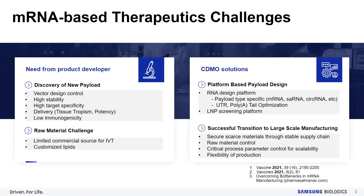I would like to start off with some of the challenges from the product developers. Once researchers find the optimal payload sequence or structure, followed by either in vitro or in vivo studies, they still need to further develop their candidate for clinical studies and eventually a commercial product. Vector design control, high stability, high target specificity, delivery issues including tissue tropism and potency, and low immunogenicity should all be regarded. For scaling and manufacturing, limited commercial sources for IVT and customized lipids can also be challenging.